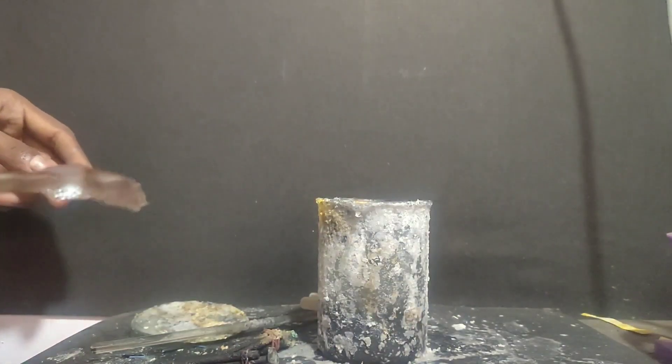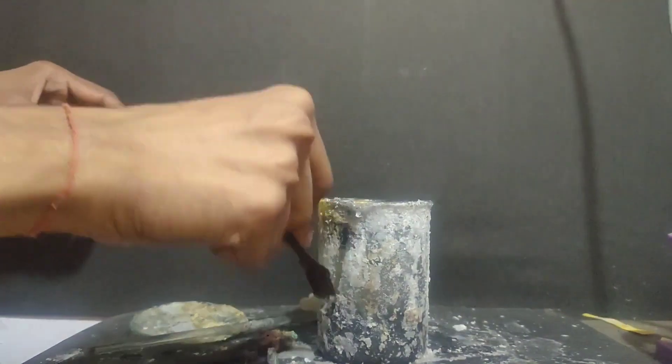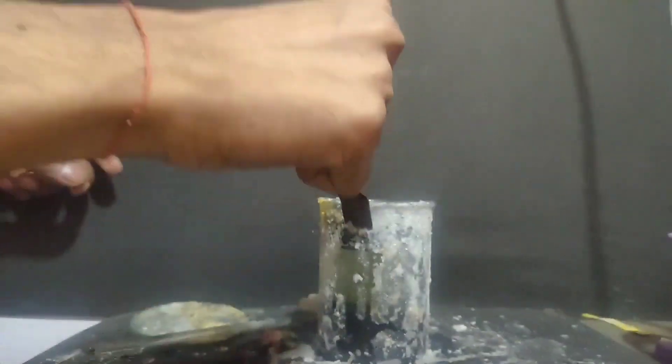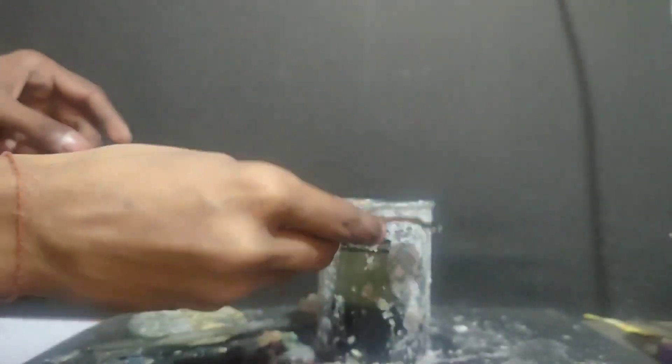After the 10th day I took off the electrodes and cleaned the beaker, first by scraping off the salt from the beaker and then by washing it with water.